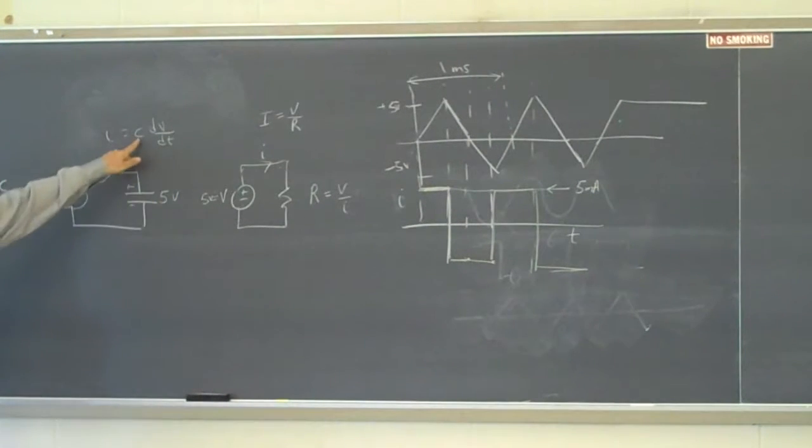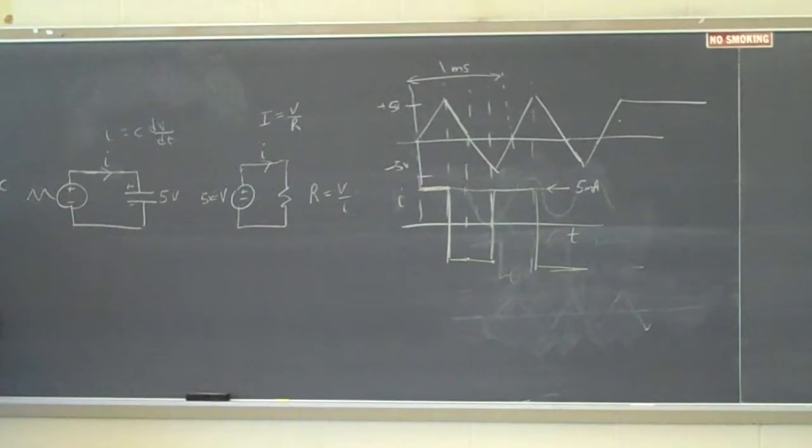So I'm trying to get c. What should I do to get the capacitance? What times what? Or what divided by what? The current by the slope. Okay. And what is the slope dv dt? 10 over 0.5 milliseconds.